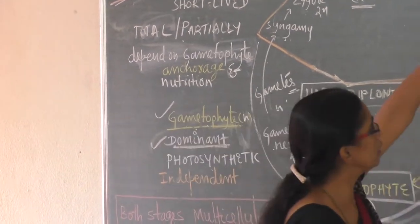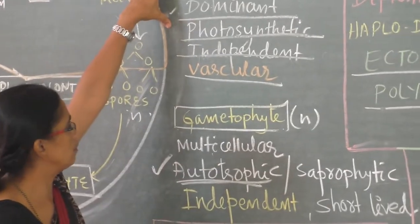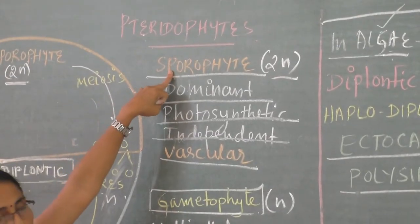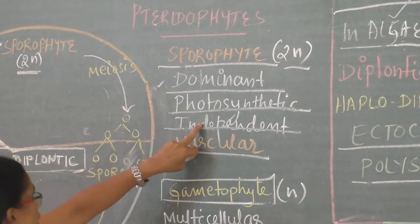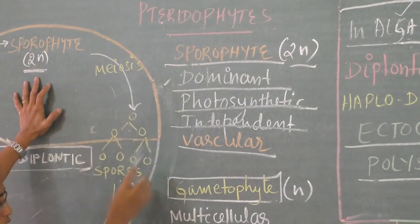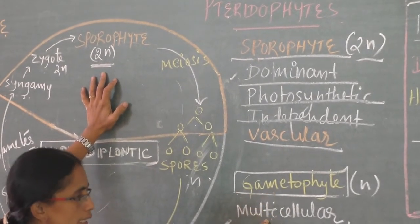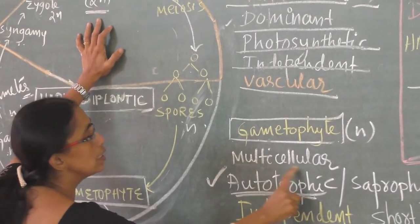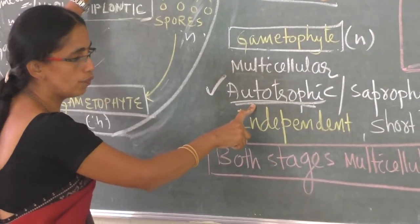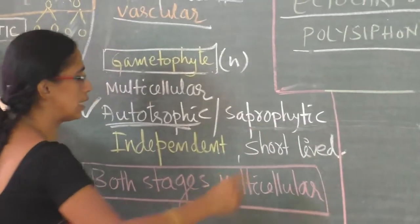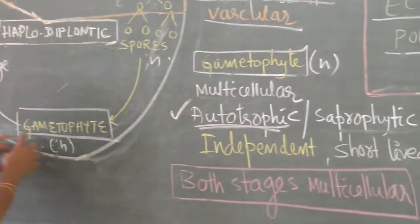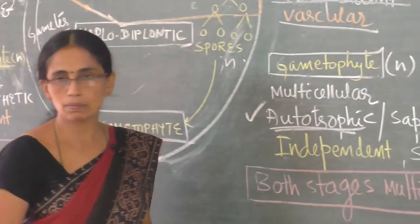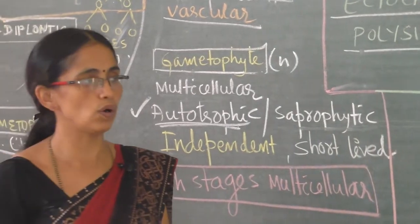In pteridophytes, the dominant phase is the sporophytic phase — green, photosynthetic, and independent. It produces spores that fall on a suitable substratum, germinate, and give rise to the gametophyte. The gametophyte is multicellular and autotrophic in most cases, though saprophytic conditions are also seen. It is independent but short-lived. The gametes fuse, resulting in the sporophyte. Both stages are multicellular.